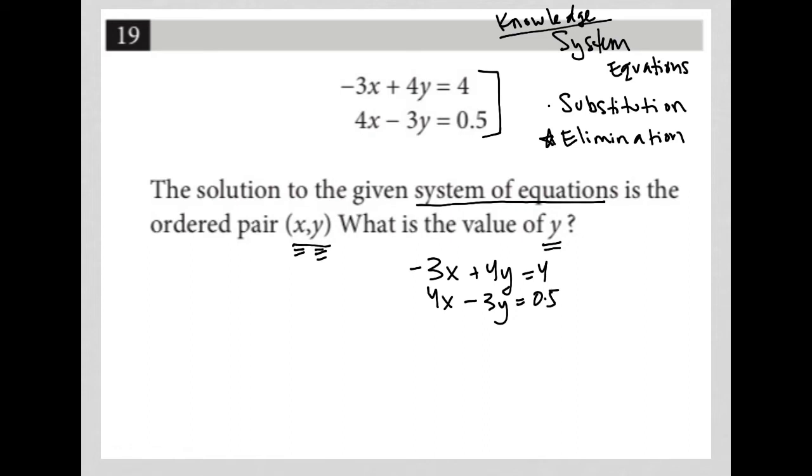Because I want to eliminate the x value, I'm going to multiply this top equation by positive 4, and multiply this bottom equation by positive 3, and then let's see why I did that.